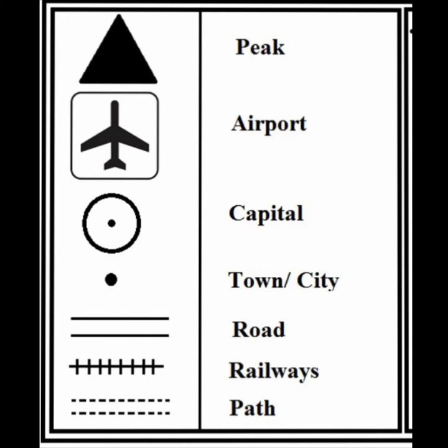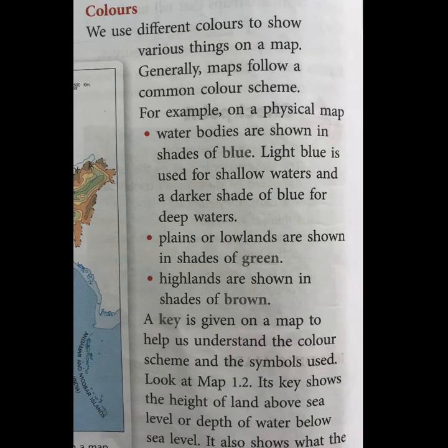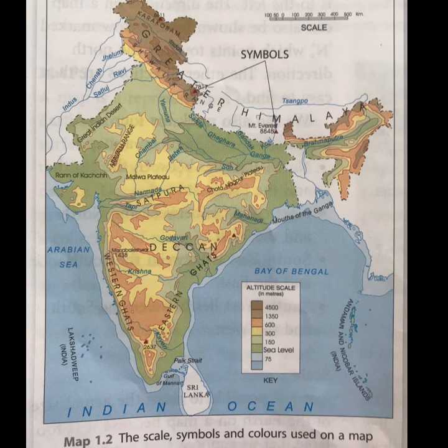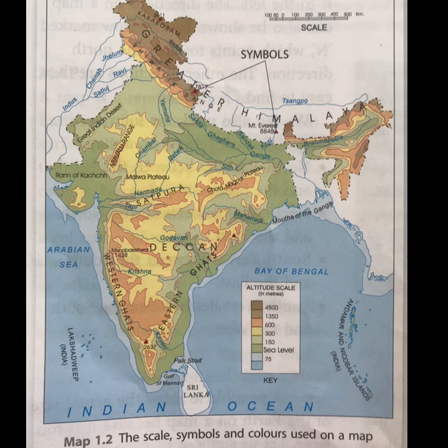There are many other symbols for different places like capital towns, roads, railways, and paths. Now, colors — we use different colors to show various things on a map. Looking at the picture of the Indian map, different colors are used to show different types of land. For example, the blue color in the Indian Ocean, Arabian Sea, and Bay of Bengal shows water bodies.